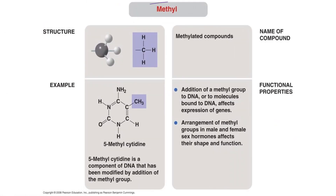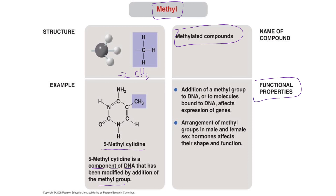The last functional group is methyl (CH₃). Compounds with a methyl group are called methylated compounds — for example, 5-methylcytidine, a component of DNA modified by addition of a methyl group to the base cytidine. Addition of a methyl group to DNA or to molecules bound to DNA can affect gene expression. This is the end of the first part of Chapter 1.